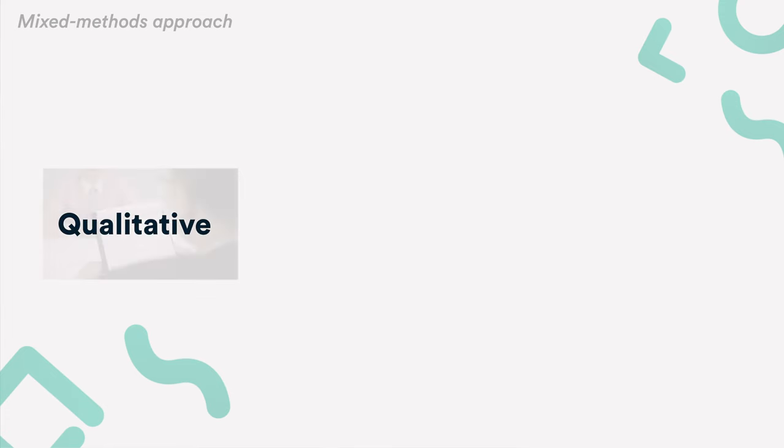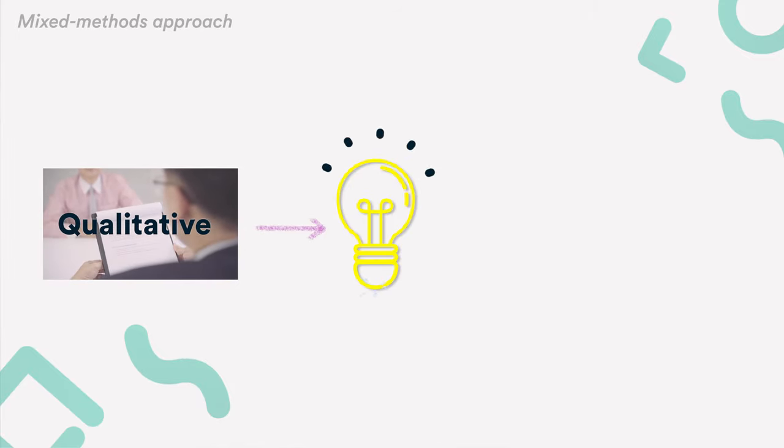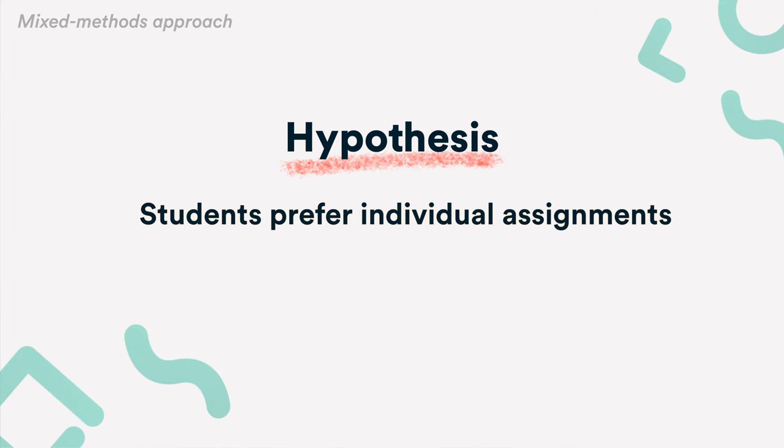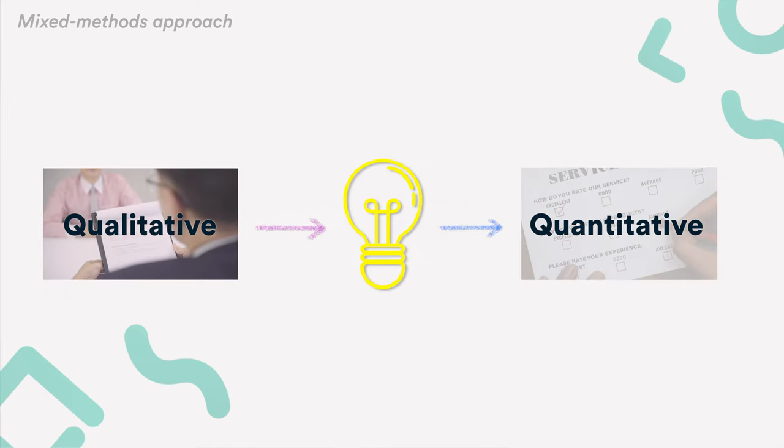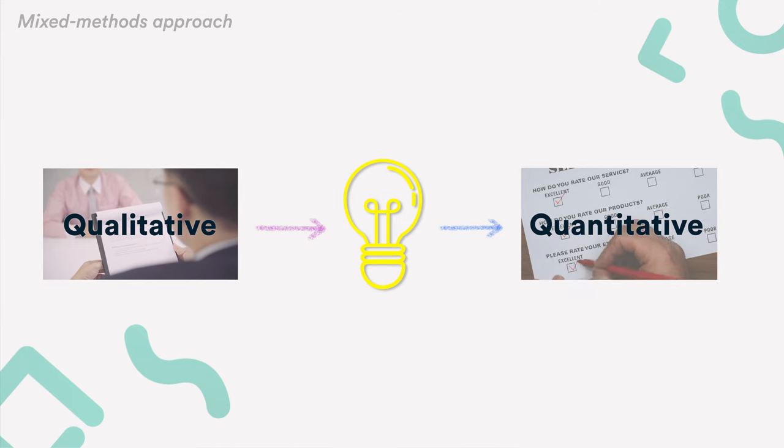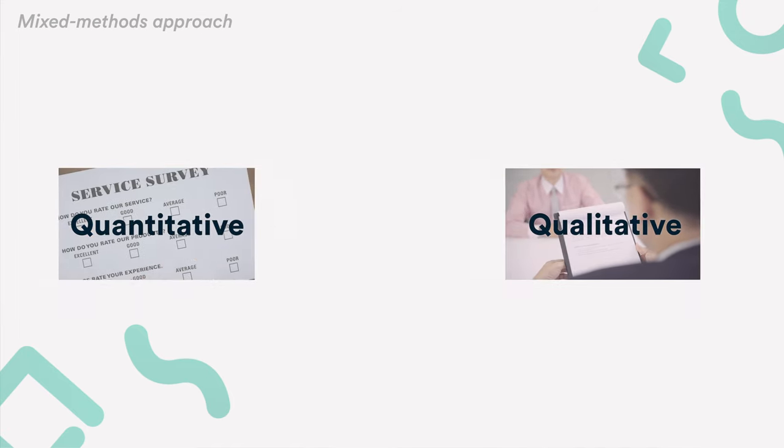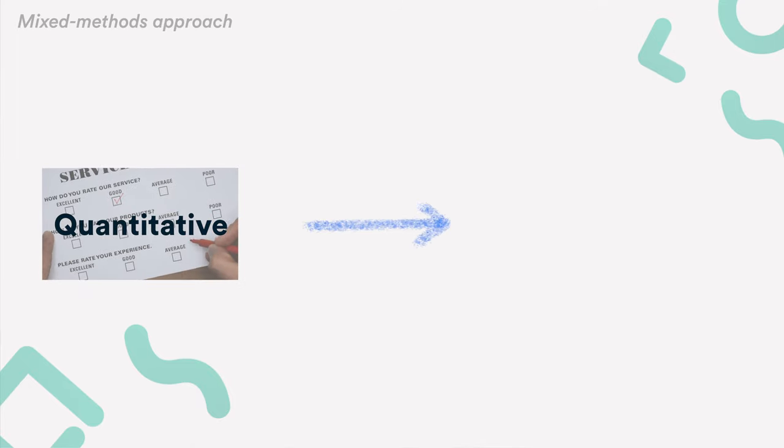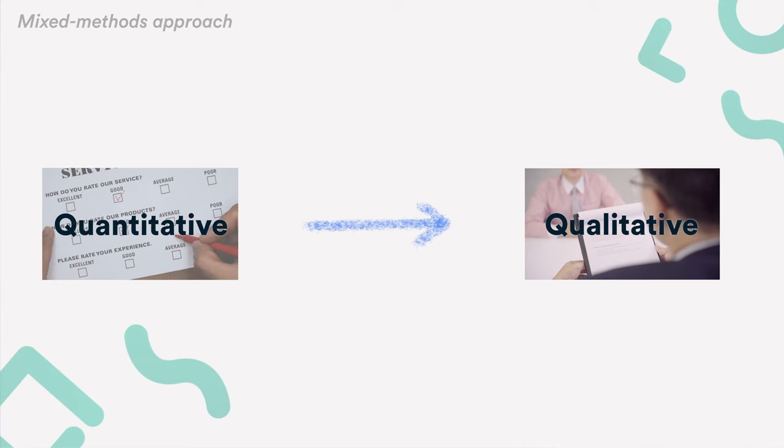For the mixed method approach, you first conduct interviews with the students. Through that, you gain new insights and come up with a hypothesis. For example, you learn through interviews that students prefer individual assignments over group projects. Then, you test whether this applies to a larger scale of students using survey research. It's also possible to do it the other way around. You can start out with a survey to see the bigger picture, then use interviews to understand the reason behind it.